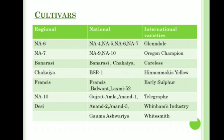Regional varieties include NA6, NA7, Banarasi, Chakaya, Francis, NA10, and Desi. National varieties include NA4, NA5, NA6, NA7, NA9, NA10, Banarasi, Chakaya, BSR1, Francis, Balwant, Lakshmi 52, Gujarat Amla, Anand 1, Anand 2, Anand 3, and Goma Aishwarya. International varieties include Glendale, Oregon, Camp Champion, Careless, Early Sulphur, Telegraph, and Winham's Industry White Smith.